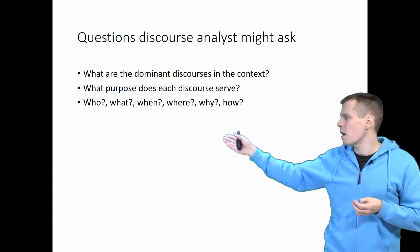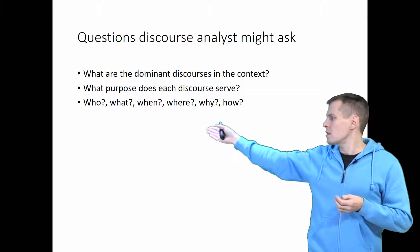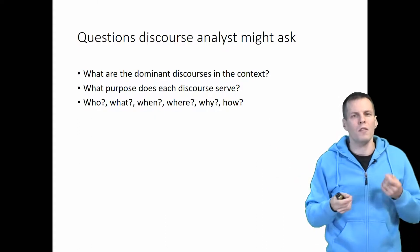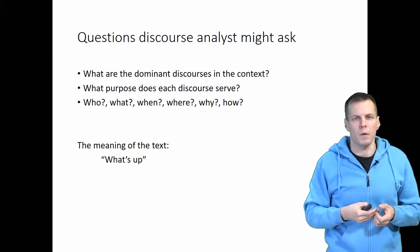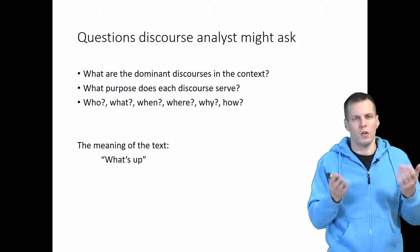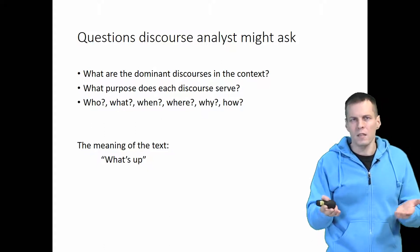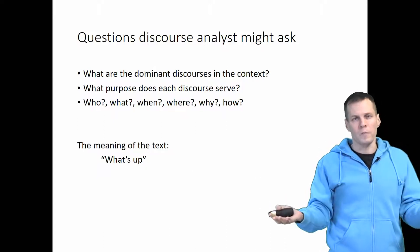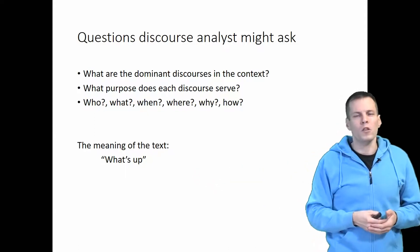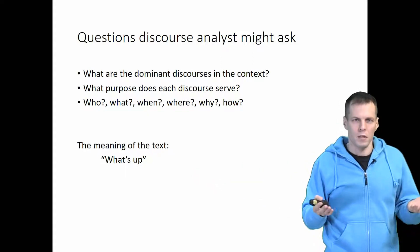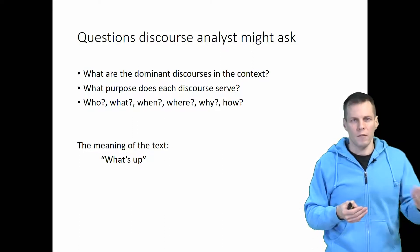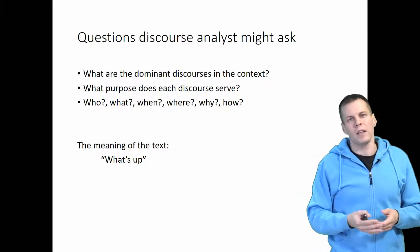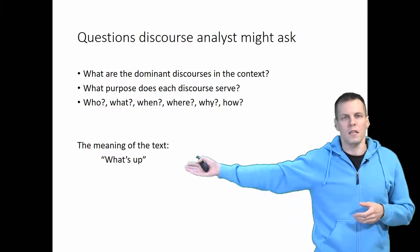We also need to understand for each text fragment: who is saying it, what are they saying, when are they saying it, where, why, and how? To understand these questions, consider the text fragment 'What's up?' Its meaning depends entirely on the context — it could be a greeting asking how someone is doing, or it could be understood as a question about direction. Whether it's a greeting or a question about direction depends entirely on the context in which these two words are spoken.